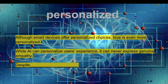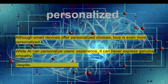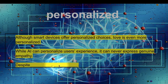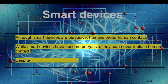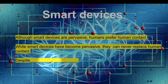Although smart devices offer personalized choices, love is even more personalized. While AI can personalize users' experience, it can never express genuine empathy. Despite personalized choices, smart devices cannot love. Although smart devices are pervasive, humans prefer human contact. While smart devices have become pervasive, they can never replace human contact. Despite the power of smart devices, love is still more powerful.